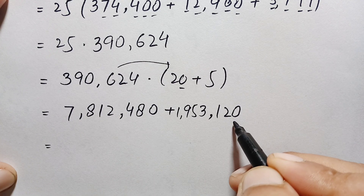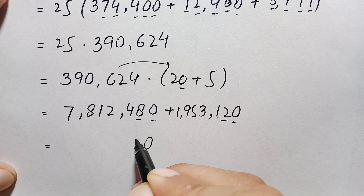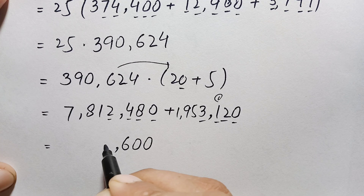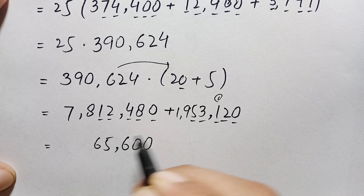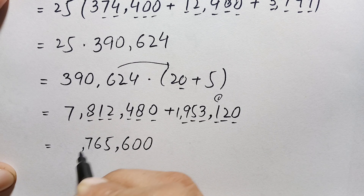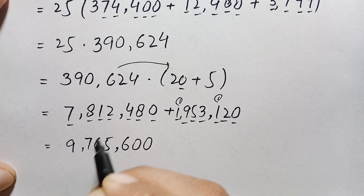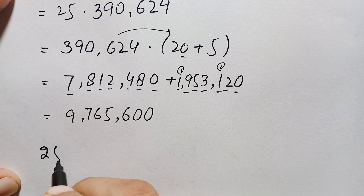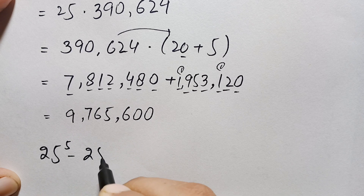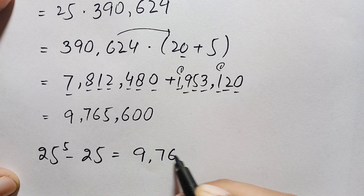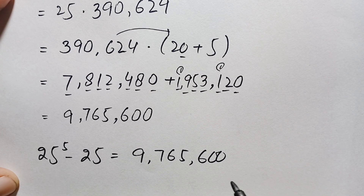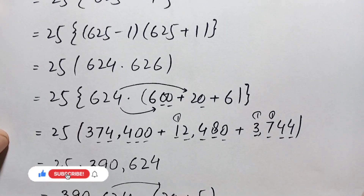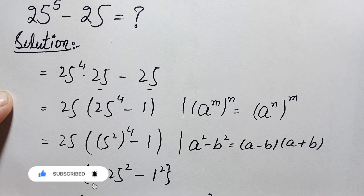Adding these two numbers: 0 plus 0 is 0; 2 plus 8 is 10, write 0 carry 1; 1 plus 1 plus 4 is 6; 3 plus 2 is 5; 9 plus 1 is 6 then 9 plus 8 is 17 carry 1; 1 plus 7 is 9. So the final answer and value of 25 raised to the power 5 minus 25 is 9,765,600. Please don't forget to subscribe to my YouTube channel for more interesting exponential math problems. Thanks for watching.